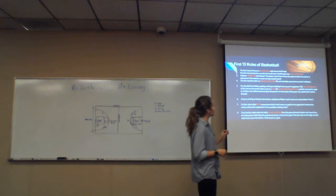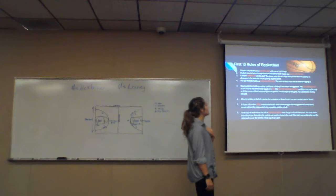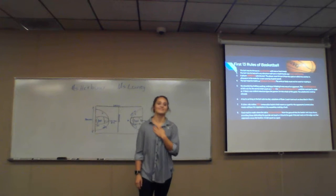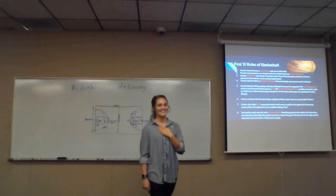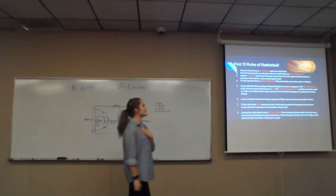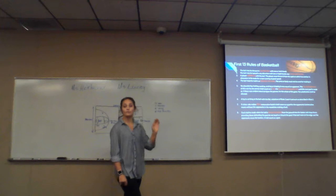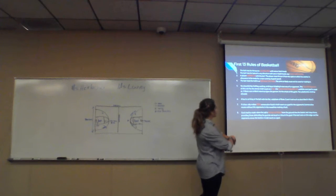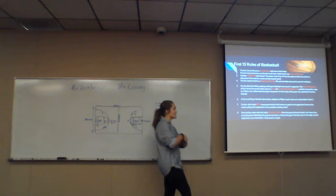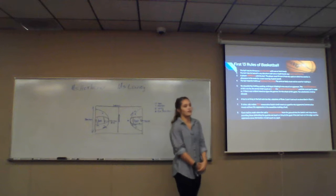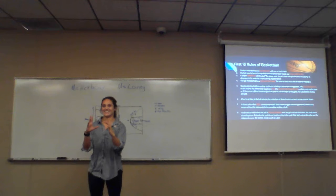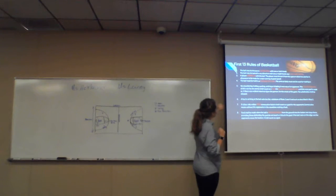The third rule: a player cannot run with the ball — the player must throw it from the spot on which they catch it, with allowance made for a man running at good speed. So basically, it just means you have to dribble the ball or bounce it while you're running down the court. The fourth rule: the ball must be held in or between the hands — the arms or body must not be used for holding it. You have to hold it in your hands.